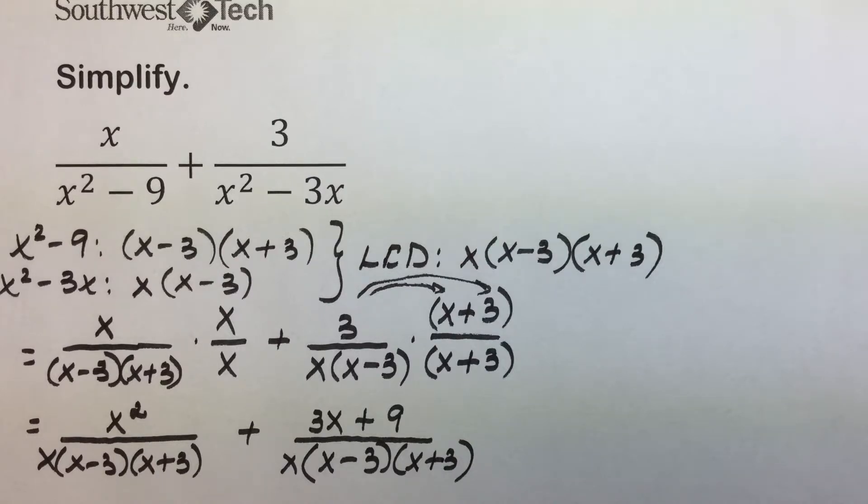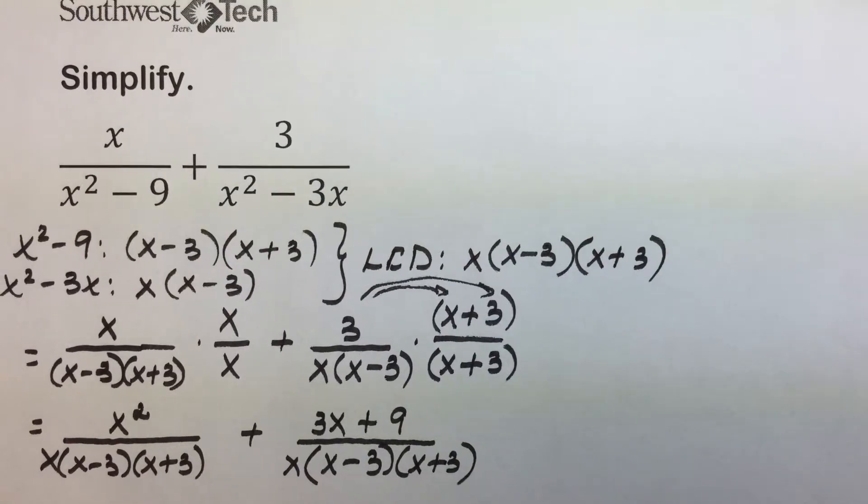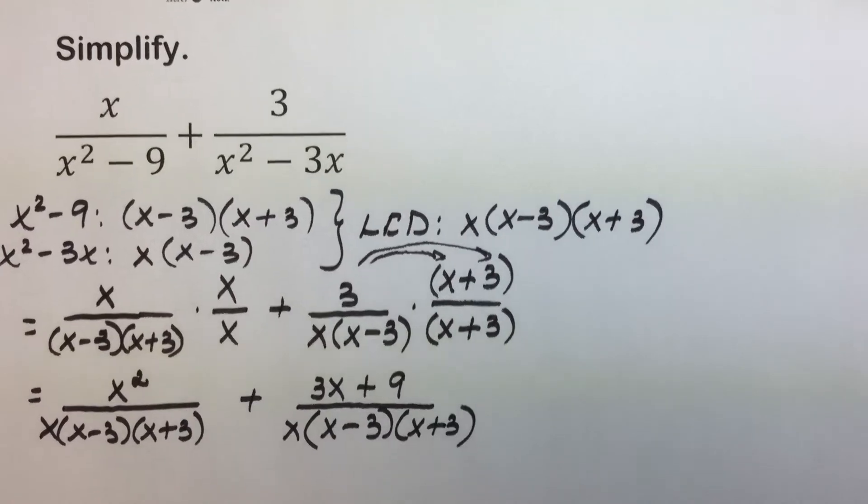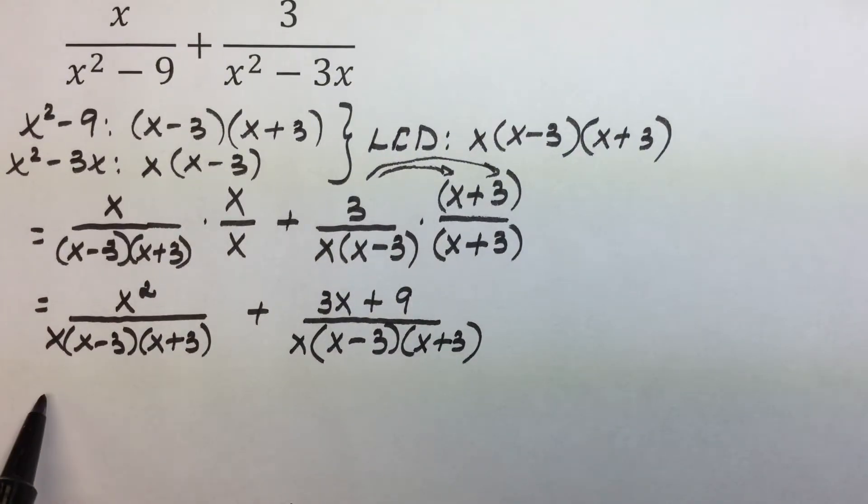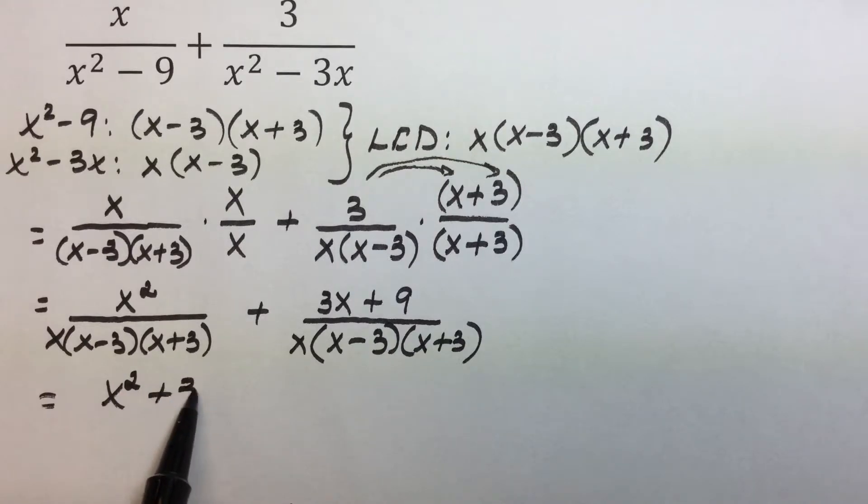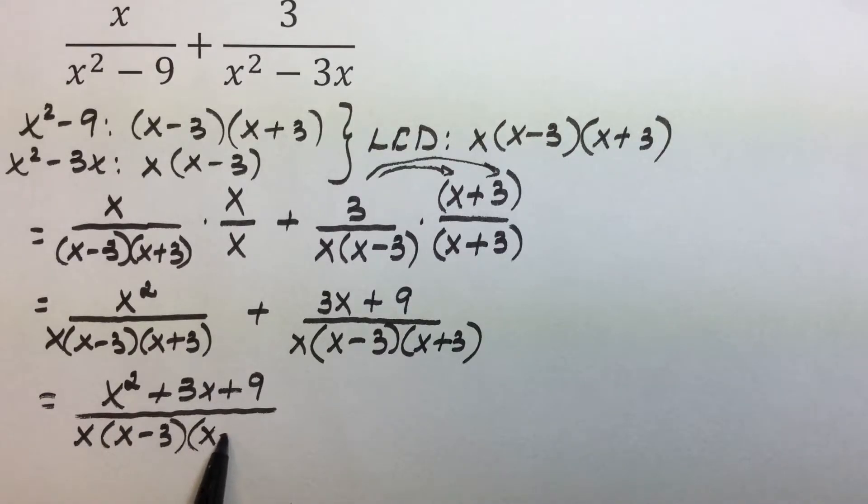We now have the requirement for any addition or subtraction of rational numbers, that being common denominators. We can go ahead then and combine the numerators x squared plus 3x plus 9 over the common denominator of x, x minus 3 times the quantity x plus 3.